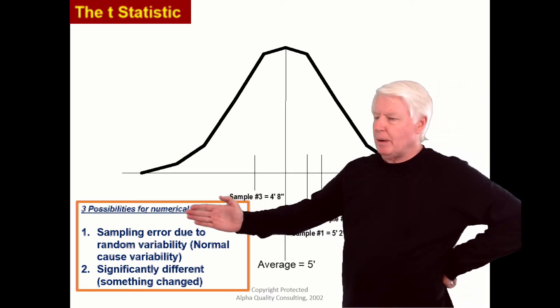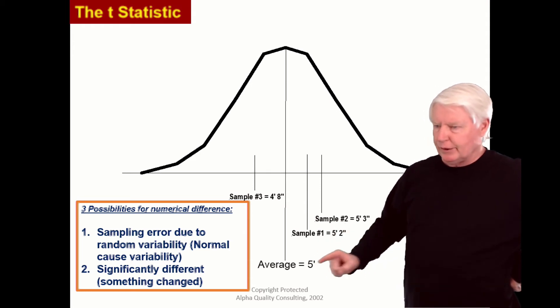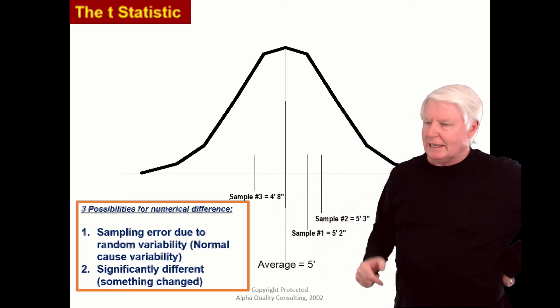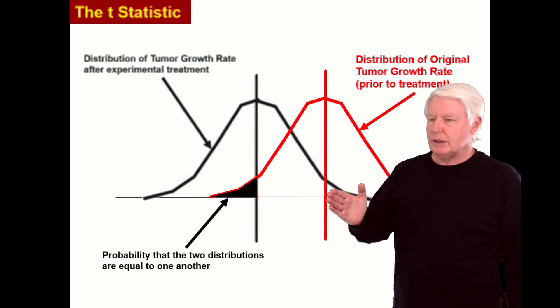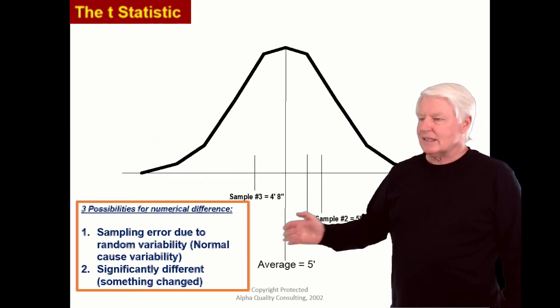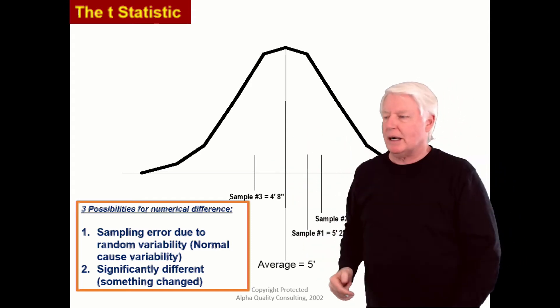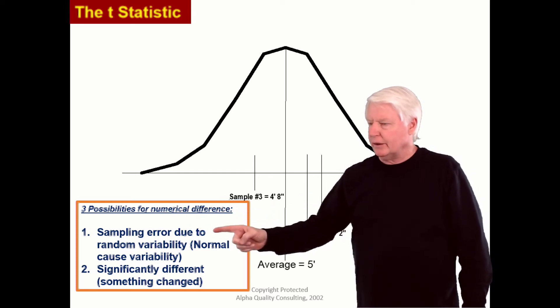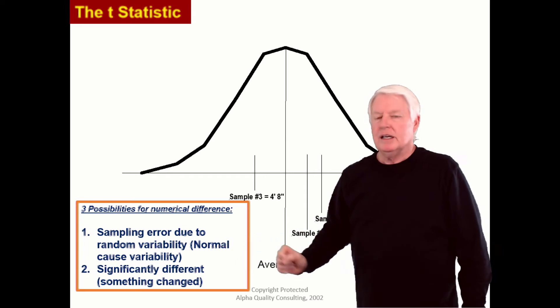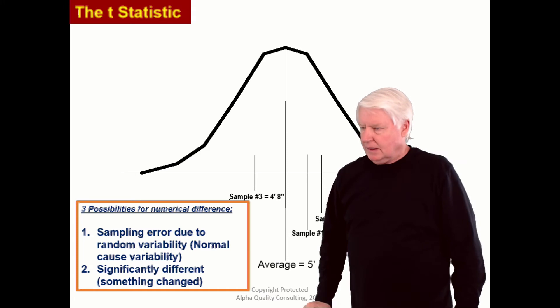By the way, there are three possibilities for numerical difference. Notice there's a numerical difference from 5 foot to 5 foot 2 or 5 foot to 5 foot 3. There's also a numerical difference between these two averages. So the question is always, what is causing the numerical difference? Three possibilities: sampling error due to random variability, normal cause variability, or significantly different, something actually changed.